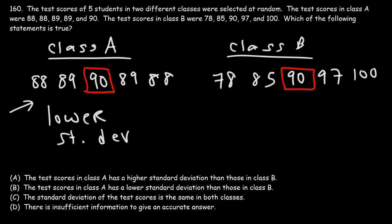Class B, on the other hand, has test scores that are very far from the mean. Therefore, it's going to have a higher standard deviation. So the correct answer for this problem is going to be answer choice B.